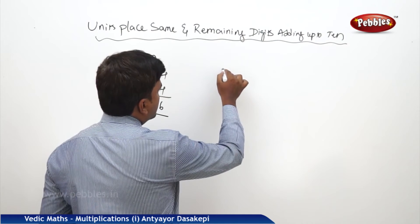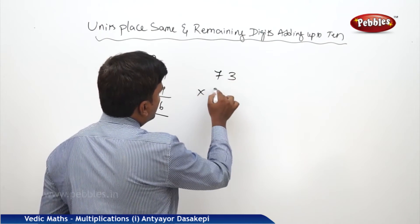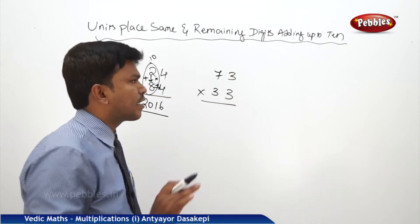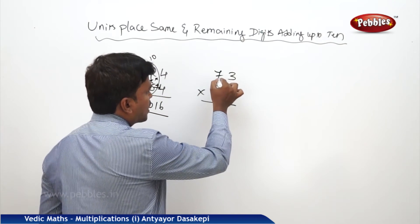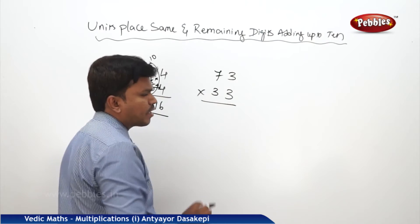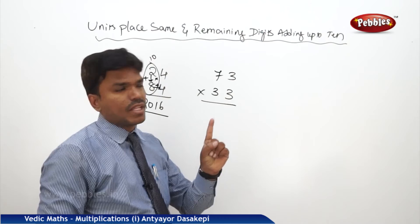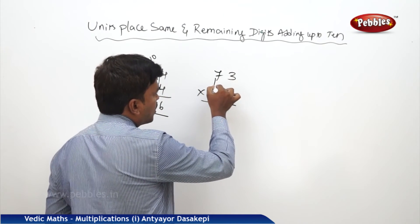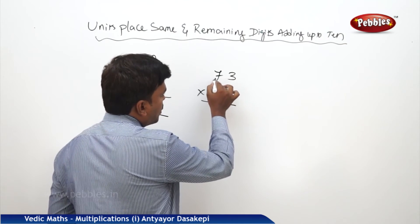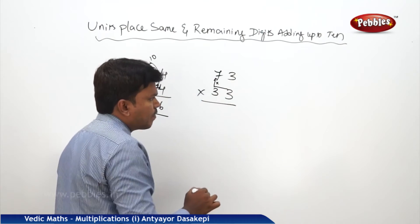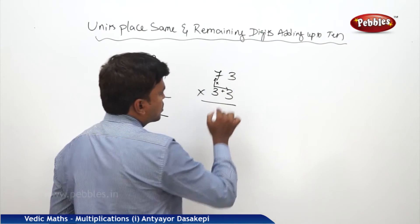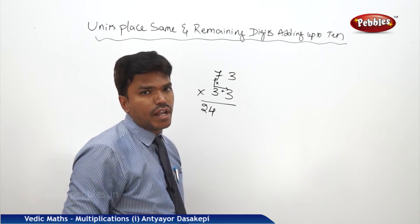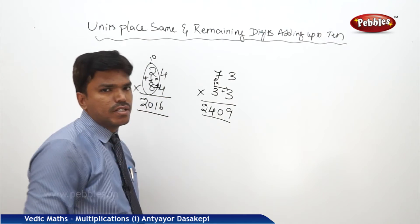One more example: 73 into 33. We can use this as an L-shape technique. First check: tens place 7 plus 3 is 10 — yes, adding up to 10. The ones digits 3 and 3 are the same. Both conditions apply. Multiply using the L-shape: 7 times 3 is 21. Add the right side digit: 21 plus 3 is 24. Write 24 here. Now 3 times 3 is 9, but place one more 0 here, so it is 09. Your answer is 2409.